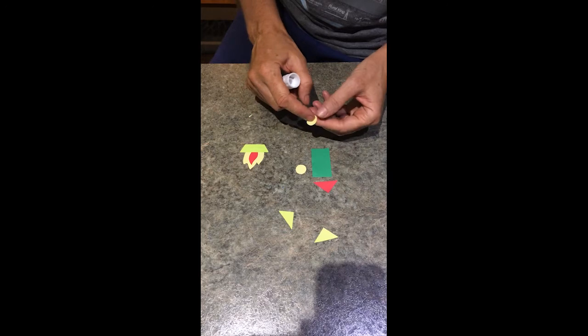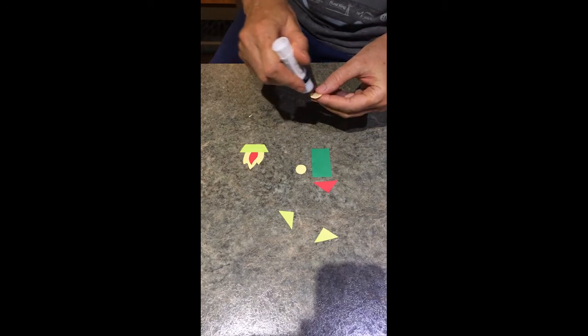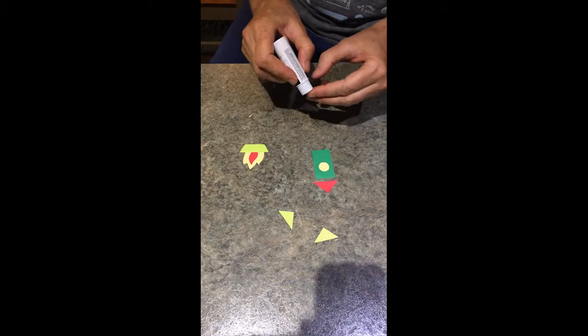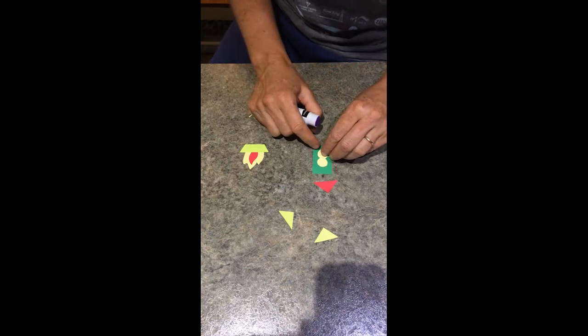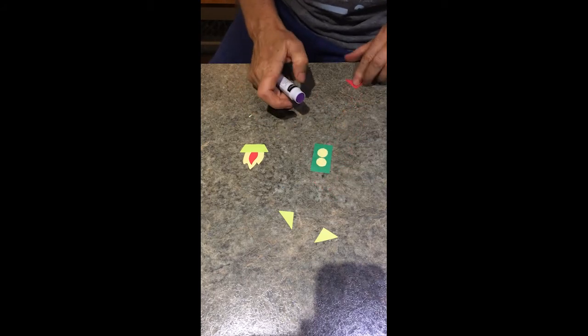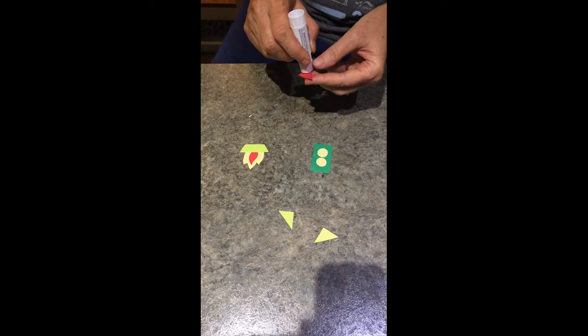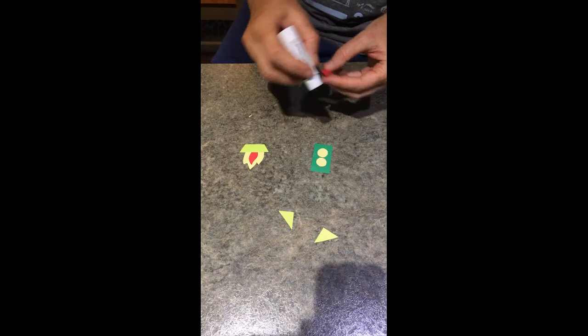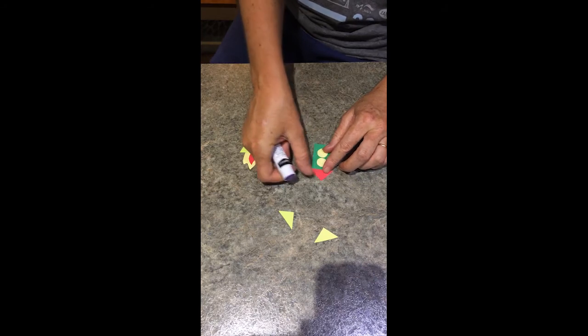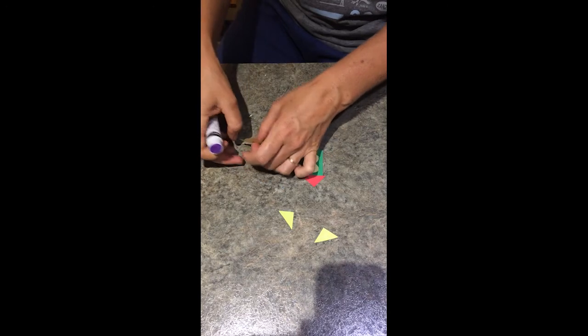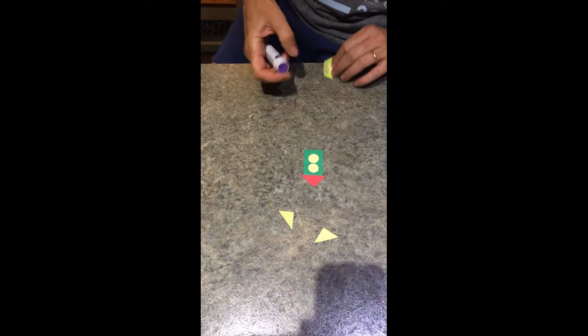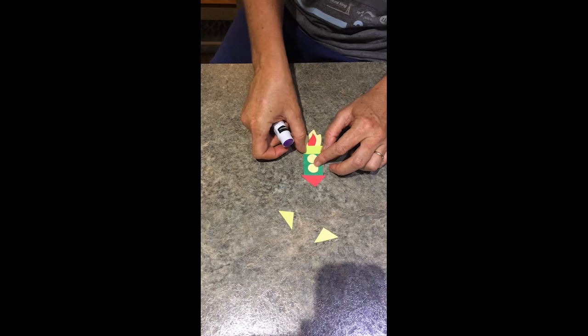Then we'll put our little dots on the body of the rocket. Another dot, might need to move that around a little bit before it gets really dry. Put the peak of our rocket on the top. And we could even turn the flame around and attach it to the rocket.